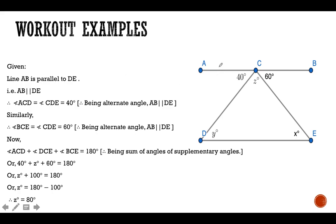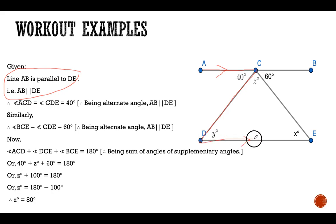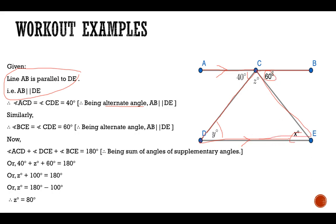The next workout example is very important. Remember, the parallel lines are either shown with arrows or stated in the equation. Here it is given in the equation. You can see the Z-formation, so this angle and this angle are equal — they are alternate angles because AB is parallel to CD. Therefore y equals 40, or angle ACD equals angle CDE, so y equals 40.